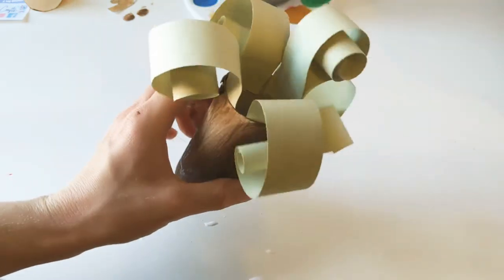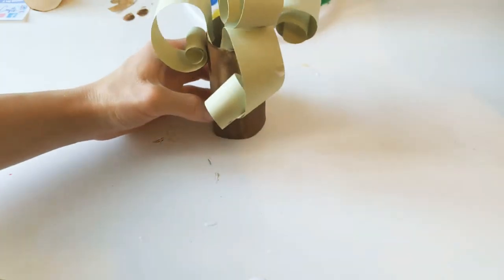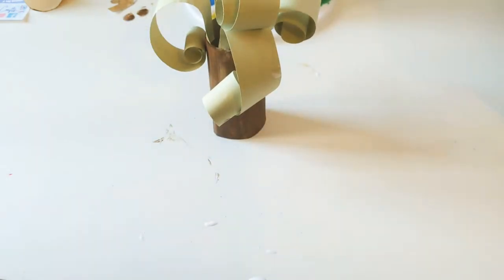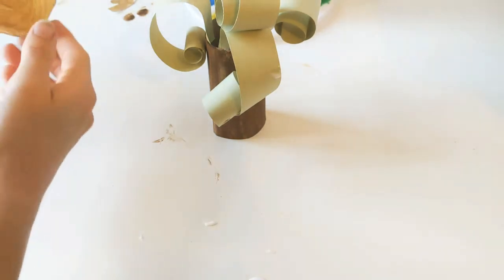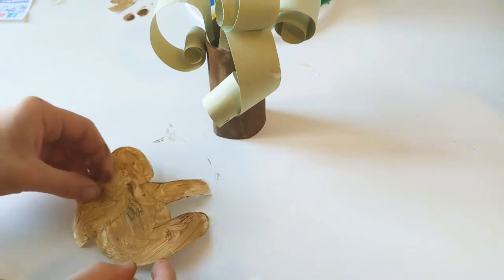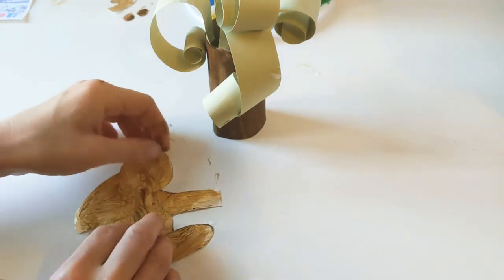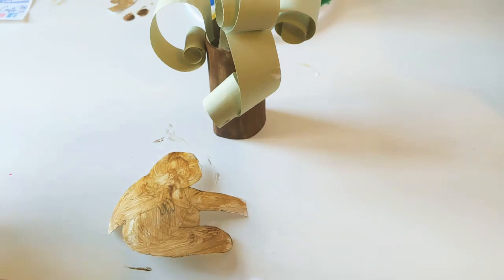There we go, there's our little jungle tree. So now we need to stick our little Sid the Sloth onto our tree as well. So before we do that, we're going to stick his face pieces all together so that these bits are all done. So here he is.